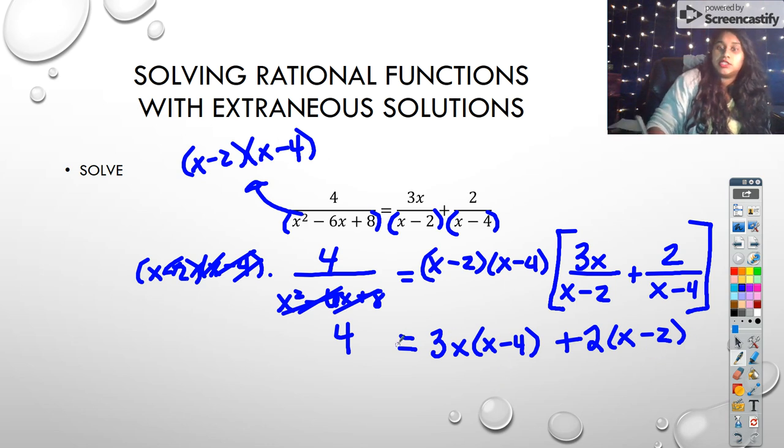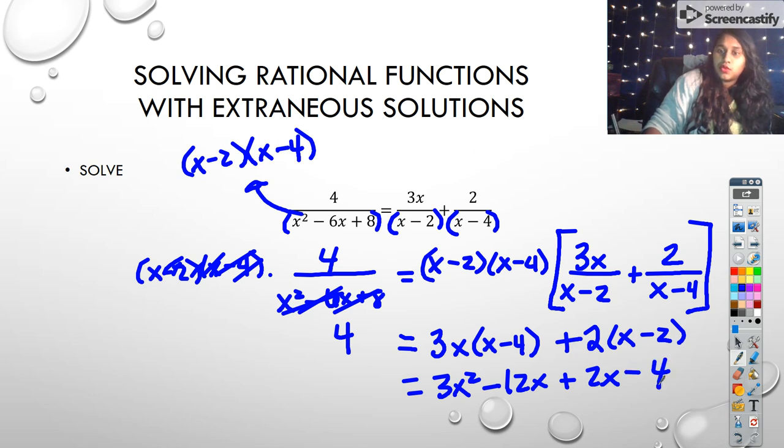Now I just distribute throughout. And so this one becomes 3x squared minus 12x plus 2x minus 4 is equal to 4. And I combine this 4, if I bring it over, is going to become a negative 8. And this would become a 0. And as you can see, I can combine these middle terms to become negative 10.